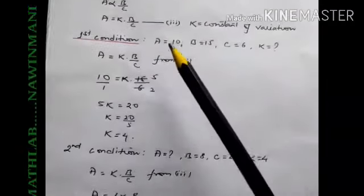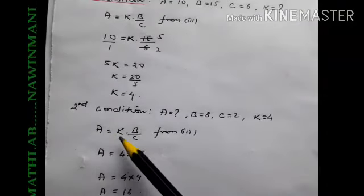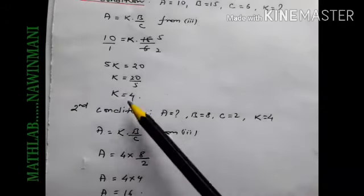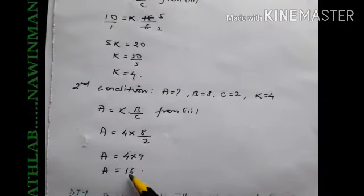We'll use the same equation number 3 and then put the values. A we have to find, K is 4, B is 8, C is 2. Calculate: A is 16.